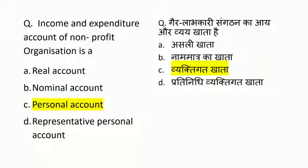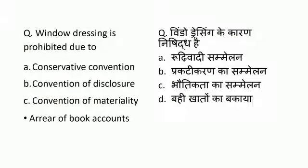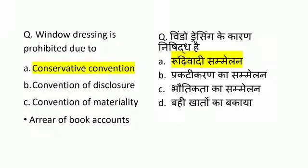Window dressing is prohibited due to — options are: conservative convention, convention of disclosure, convention of materiality, and area of book account. Window dressing is prohibited due to conservative convention.